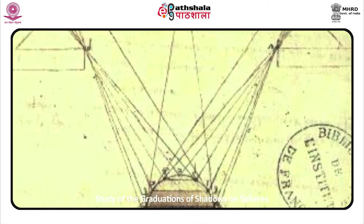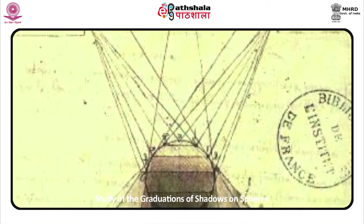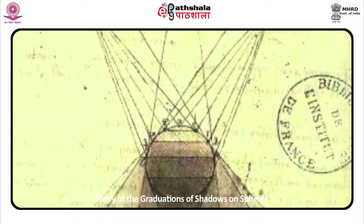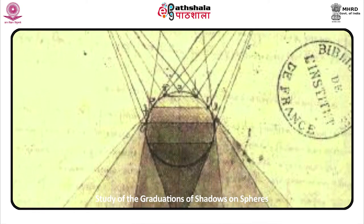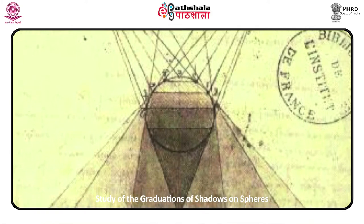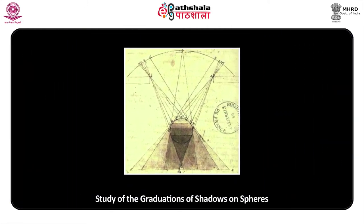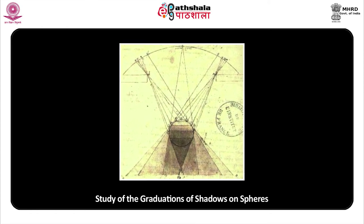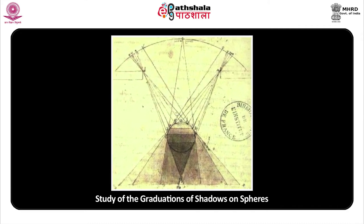According to da Vinci, there are four kinds of light: diffused light, as that of the atmosphere; direct, as that of the sun; reflected light; and the fourth, light that passes through translucent bodies such as paper. In his paintings, he introduced chiaroscuro, a style of shading that dominates tone more than color, thus painting a broader range of luminance than the eye actually sees. His Mona Lisa and the Virgin of the Rocks are excellent examples of this style.